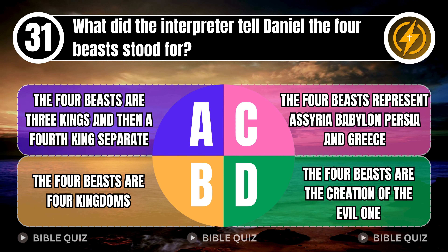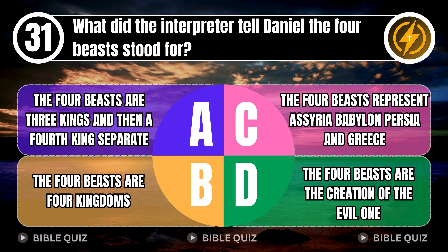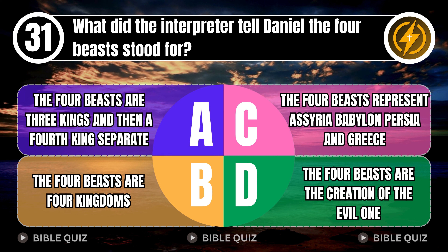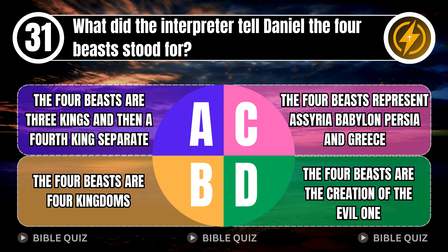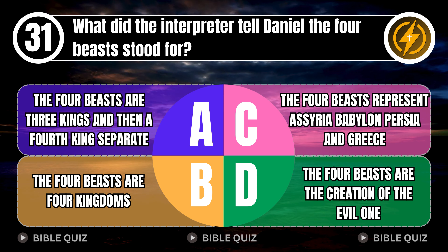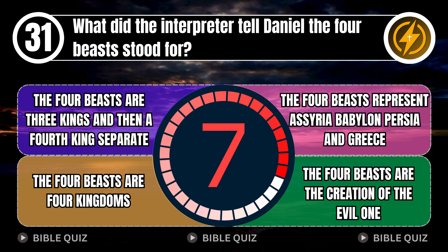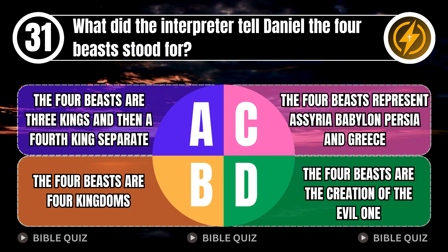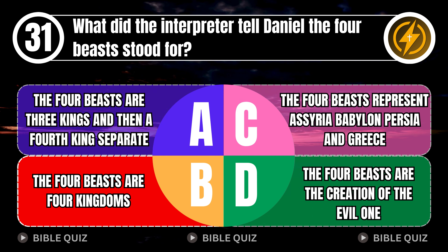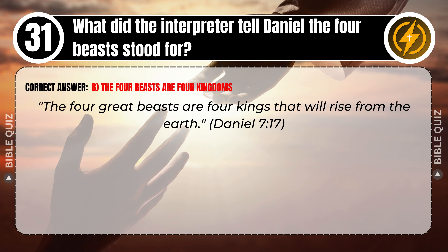Question 31: What did the interpreter tell Daniel the four beasts stood for? A. The four beasts are three kings, and then a fourth king separate. B. The four beasts are four kingdoms. C. The four beasts represent Assyria, Babylon, Persia, and Greece. D. The four beasts are the creation of the evil one. Correct answer: B. The four beasts are four kingdoms. The four great beasts are four kings that will rise from the earth. Daniel 7 verse 17.